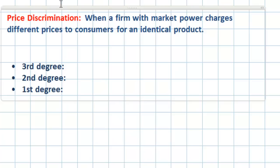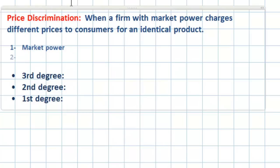There are three conditions necessary for price discrimination to occur. First, a firm must have market power. A perfectly competitive firm could not price discriminate, because a perfectly competitive firm is a price taker and must accept the price determined by the market.